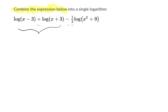These two terms end up becoming the log of x minus 3 times x plus 3. And that's based on this law right here: The log of a plus the log of b equals the log of ab, a times b.